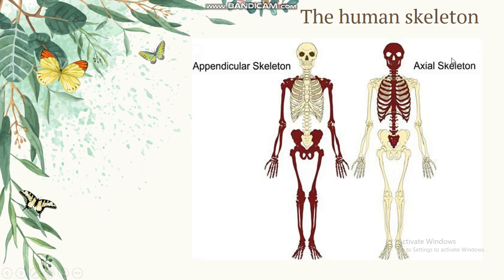The human axial skeleton consists of the skull, which means tengkorak, the vertebral column, which means tulang belakang, and the ribcage, which means tulang rusuk.